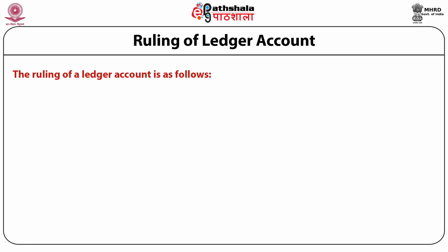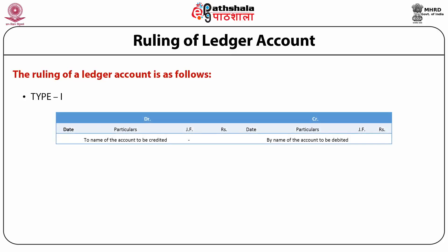The ruling of ledger account is as follows. Type 1: first column is date, second is particulars, third is journal folio, and fourth is amount — this is the debit side. We repeat all these columns for the credit side also: date, particulars, journal folio, and amount in rupees.